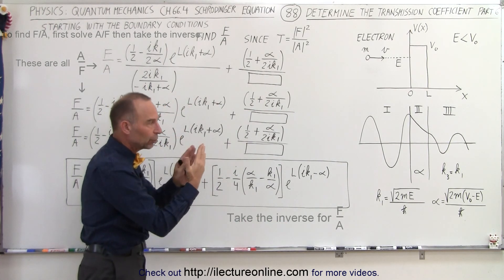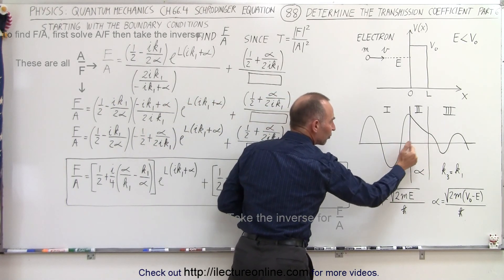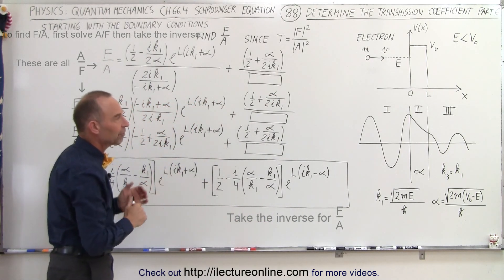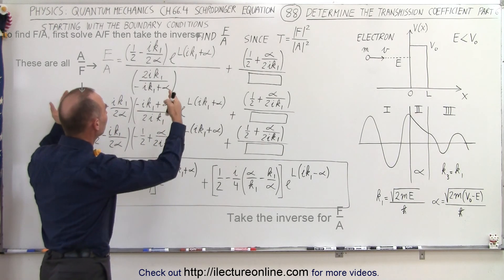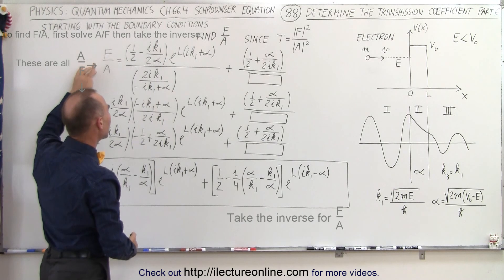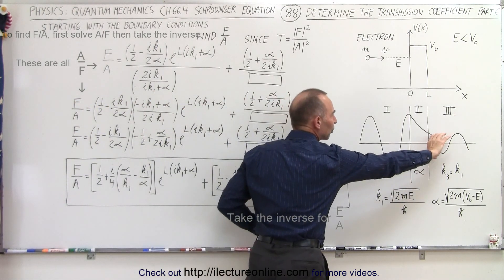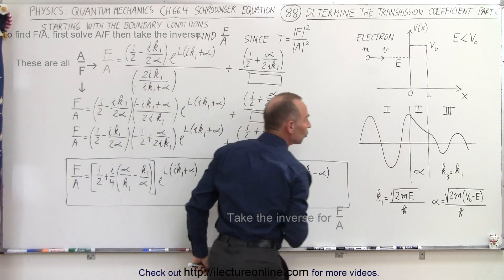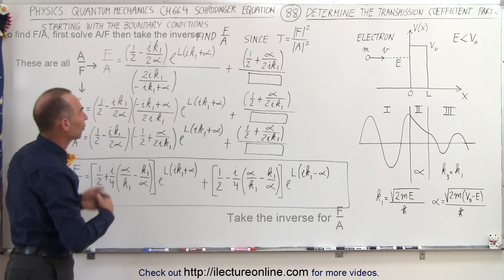We set those equal to each other at the boundaries to find the boundary conditions, and also take the derivative of each equation at the boundaries. We take those four equations and eventually solve them down to the ratio of F over A — F being the coefficient describing the amplitude in region three, and A describing the amplitude in region one. The ratio of those two squared is the transmission coefficient.